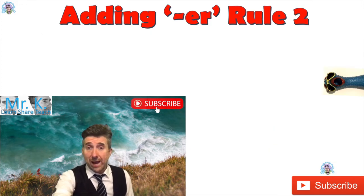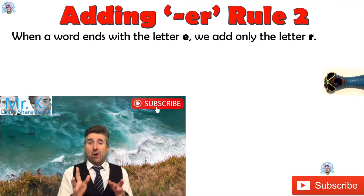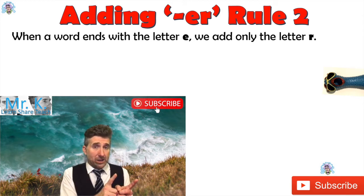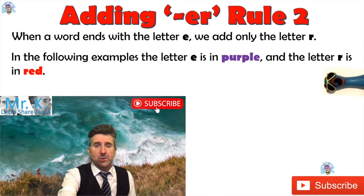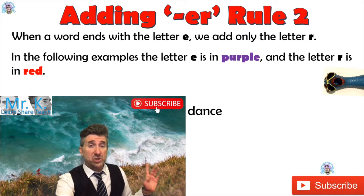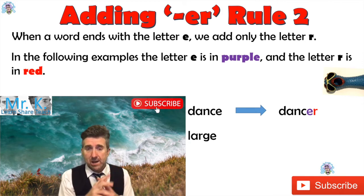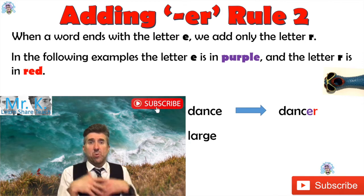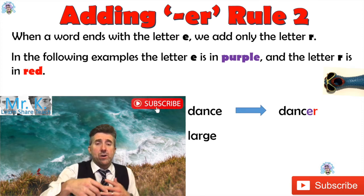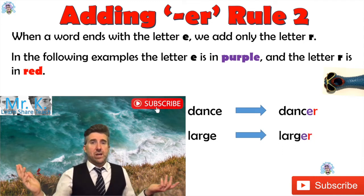On to rule two of how to add ER to a word: when the word ends with the letter E, we add only the R. So let's look at an example. The word 'dance' ends in the letter E, so in this case we would just add the R — 'dancer.' Here's another example: 'large.' Now this one's an adjective. Large ends in an E, so we just add an R — 'larger.' We want to say that it's more large. We've just added the R.